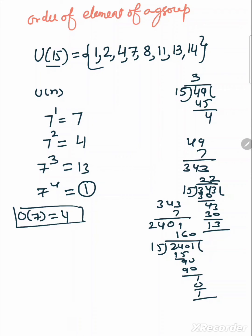Let's take another. Order of 4: 4 raised to power 1 equals 4. 4 raised to power 2 equals 16. 16 divided by 15 because it's under modulo 15 is 1. So order of 4 is 2. After applying this operation two times we get identity element.